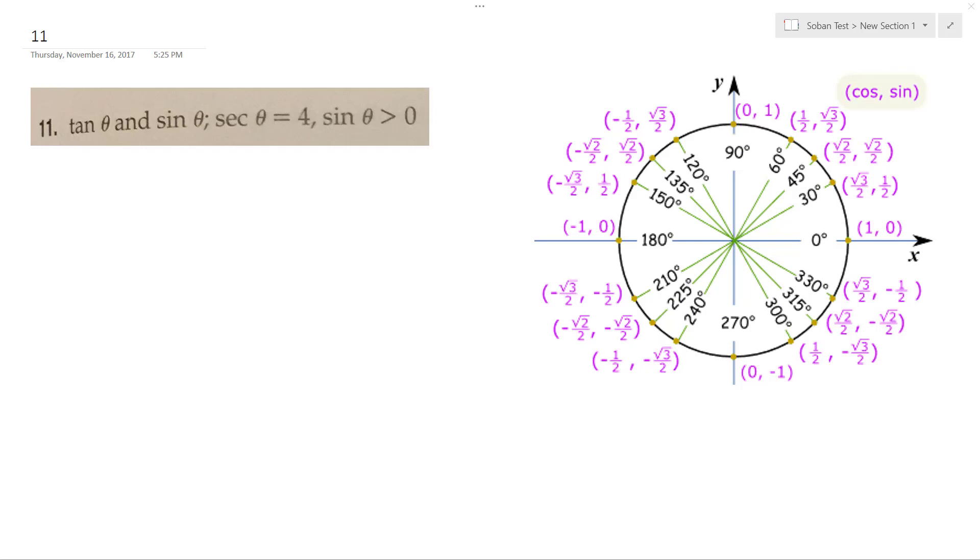All right, solving this problem, we want to find tangent of theta and sine of theta. Secant of theta is equal to four, and we know that the sine is greater than zero.